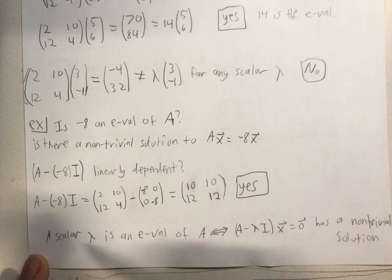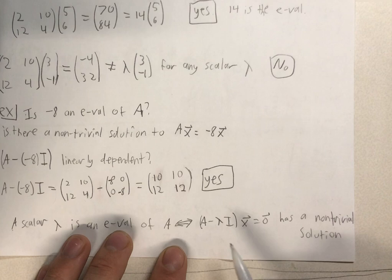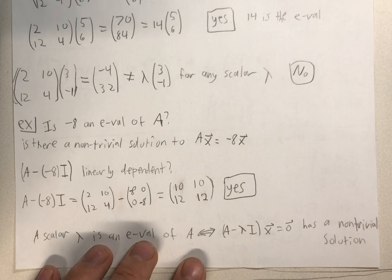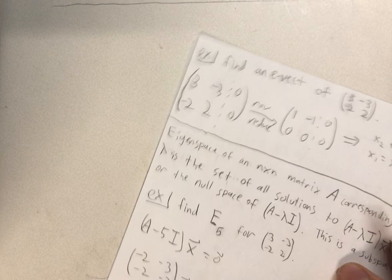Remember, any scalar lambda is an eigenvalue of A if and only if A minus lambda I times X equals 0 has a non-trivial solution. Remember, non-trivial because eigenvectors cannot be 0. Okay, another example.